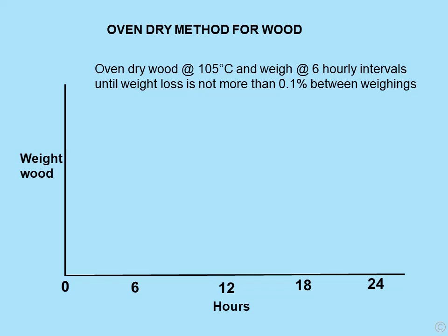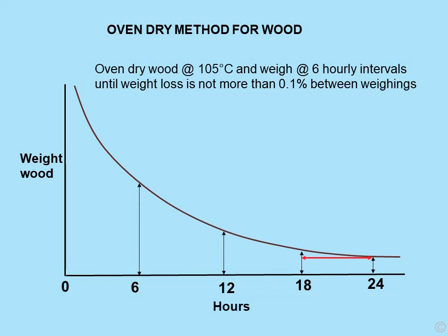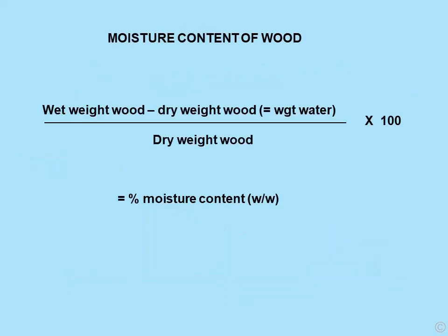There is another method — the oven dry method. One takes a piece of wood, weighs it, and then dries it in an oven at 105°C, weighing it periodically until the weight loss is no more than 0.1% between weighings, since once you start drying wood it continues to lose weight even tiny bit by tiny bit. The calculation is: wet weight minus dry weight (giving the weight of water), divided by the dry weight, times 100 — giving the percent moisture content by weight.